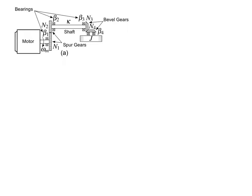So there is a 1-junction here, here, here, and here. At those 1-junctions we need to determine if there are any associated elements. For instance, at the first 1-junction we have the motor, which we are treating as an angular velocity source. We have a bearing and one side of our gear pair. At the second 1-junction we have a bearing and the other side of our gear pair. At the third we have a bearing and one side of our bevel gear set. At the fourth we have a bearing, the other side of our bevel gear set, and rotational inertia.